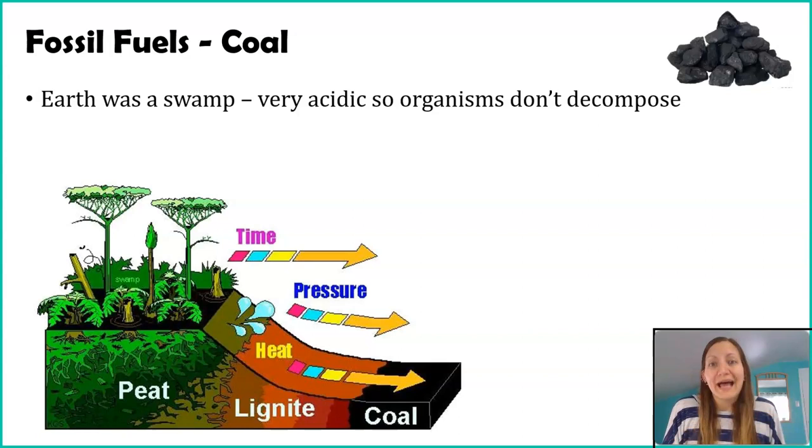So what happens is that when this tree dies, when this fern dies, when any of this vegetation dies, typically in a regular environment, it dies, it falls to the ground, but there's lots of bacteria, lots of fungi around to break it down and recycle all those nutrients back to the soil. But when you don't have those fungi and you don't have those decomposers around...